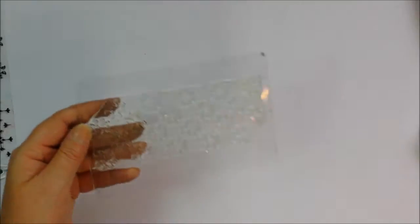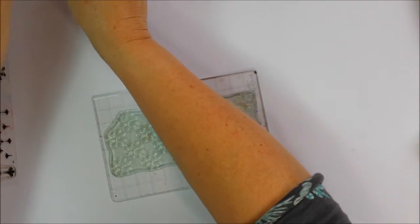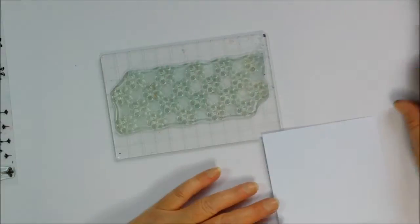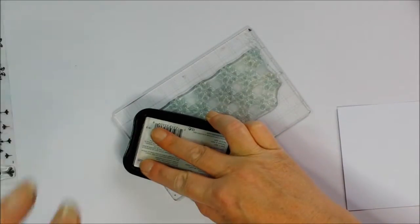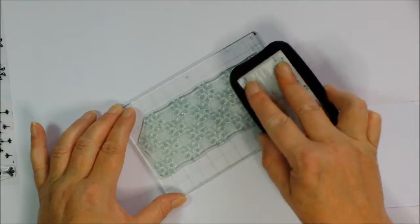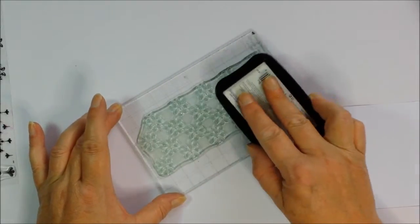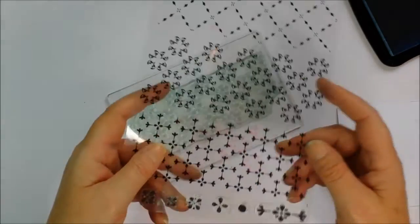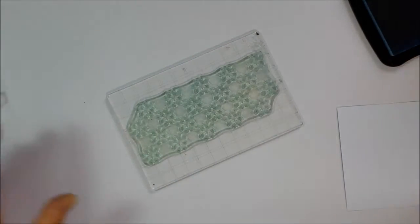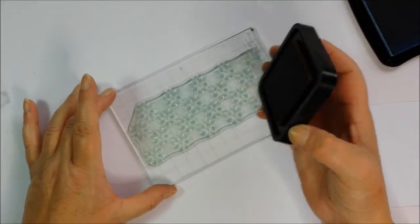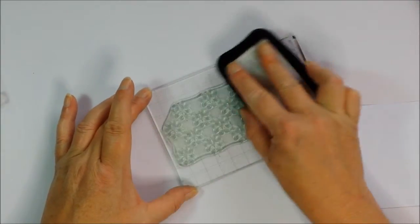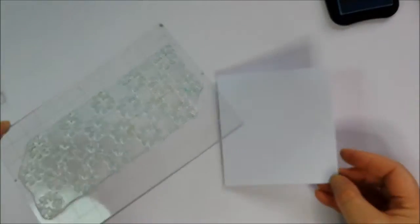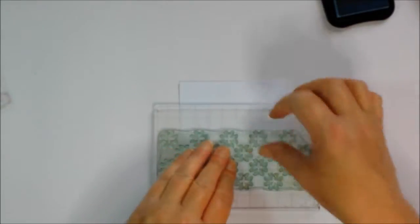I've already mounted all my stamps onto acrylic blocks to save time. You do need quite large blocks for this one, so be aware. I find the thinner blocks easier to use because you don't get that parallax error with thicker blocks. I'm inking up this floral design in summer sky memento, adding a little touch of tea dye distress, then softening it again with the summer sky.